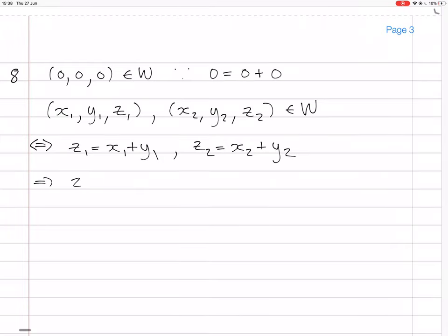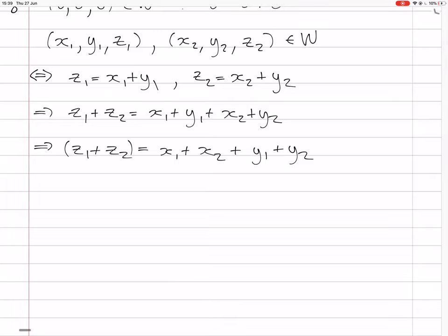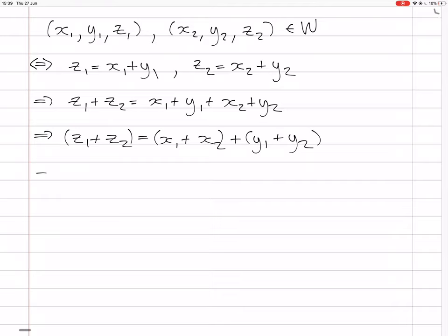But if that's the case, then Z1 plus Z2 equals X1 plus Y1 plus X2 plus Y2, right? But that implies because of the fact that addition is commutative, you can swap that X2 with the Y1, and you can stick brackets on it to make it clearer that now these are the components of vector X1 plus X2, Y1 plus Y2, Z1 plus Z2, right? And that is in W.